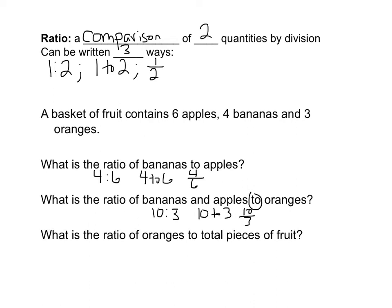Alright, so why don't you go ahead and pause the video and then just try this next one on your own. So what is the ratio of oranges to total pieces of fruit? So oranges would be three, and total pieces of fruit would be thirteen. So you could have three to thirteen, or three over thirteen.